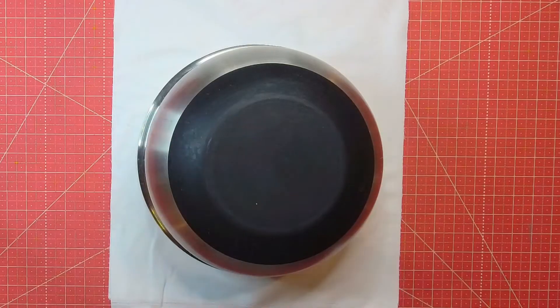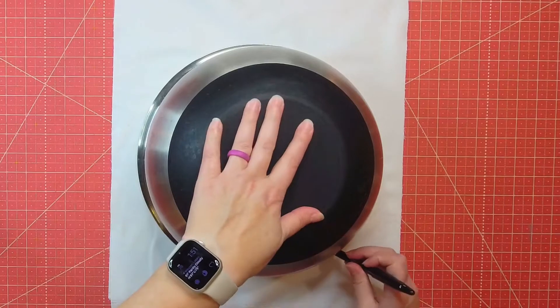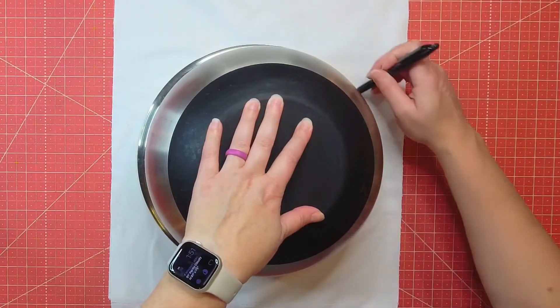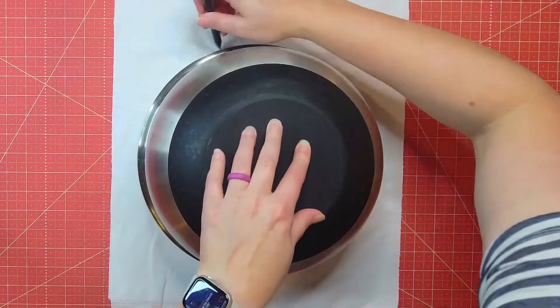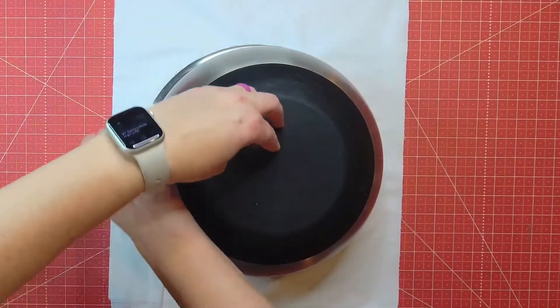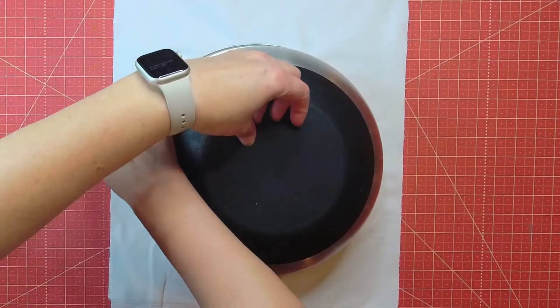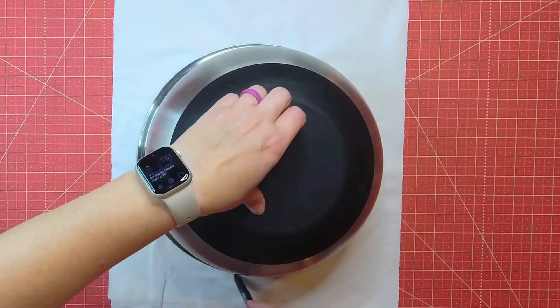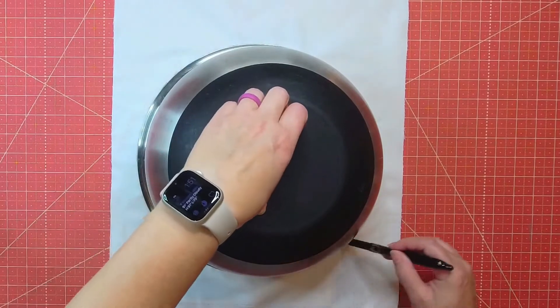Now I'm using a friction pin that is heat erasable to trace out a circle. So I'm just using a mixing bowl that I have that is about the size that I want my pillow to be. So I just kind of looked at the printout that I made, that I used for the Jack Skellington face and made sure it would fit in the circle area.